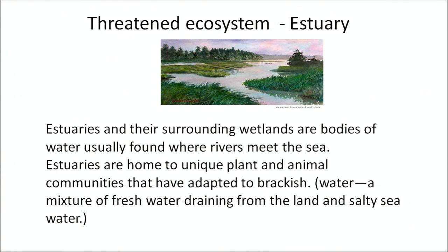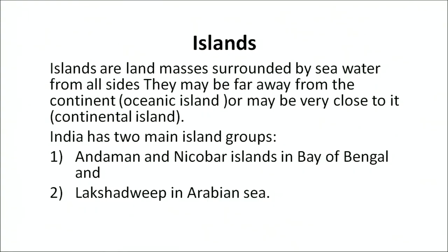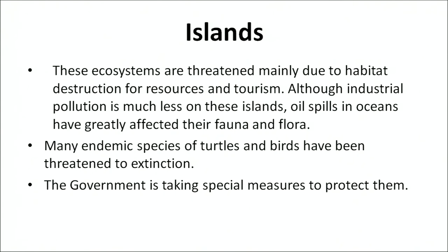Estuaries are a different type of ecosystem, found where rivers meet the sea. They are home to unique plant and animal communities adapted to brackish water, which is a mixture of freshwater and marine water. Islands are also one type of ecosystem — land masses surrounded by sea water on all sides. They may be far from continents, called oceanic islands, or close to the mainland, called continental islands. The two continental islands of India are Andaman and Nicobar in the Bay of Bengal and Lakshadweep in the Arabian Sea. Islands are threatened mainly due to habitat destruction, resource exploitation, and tourism.